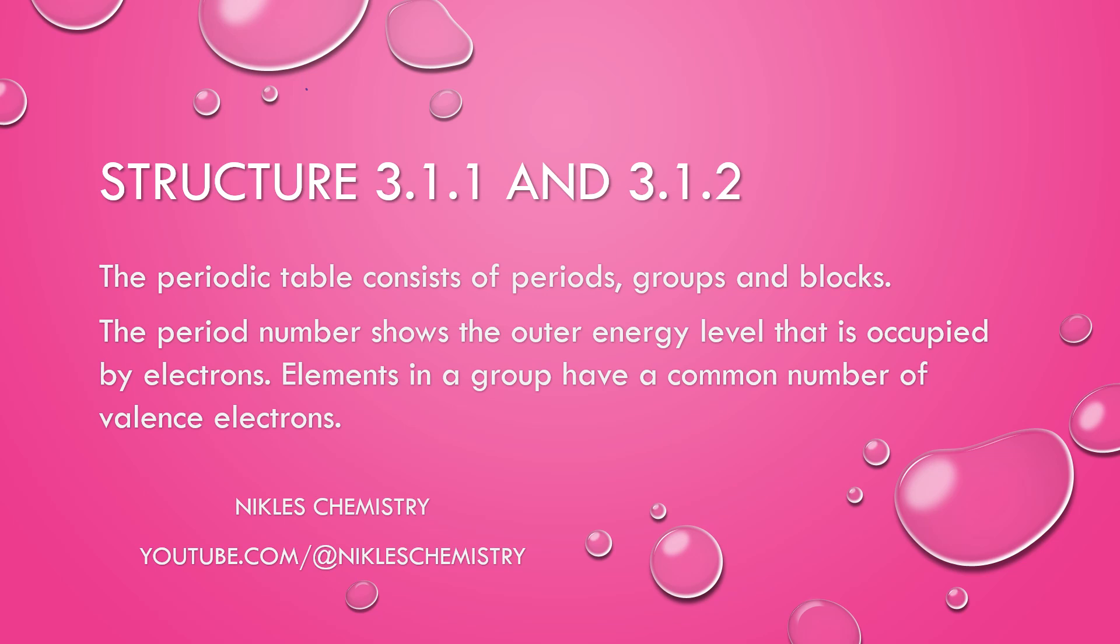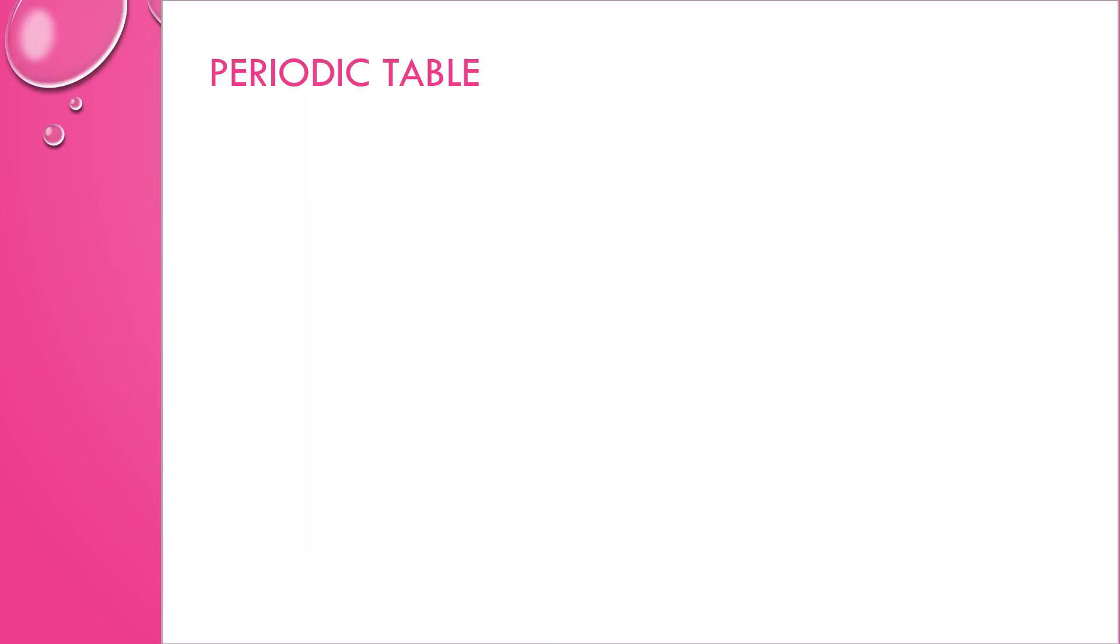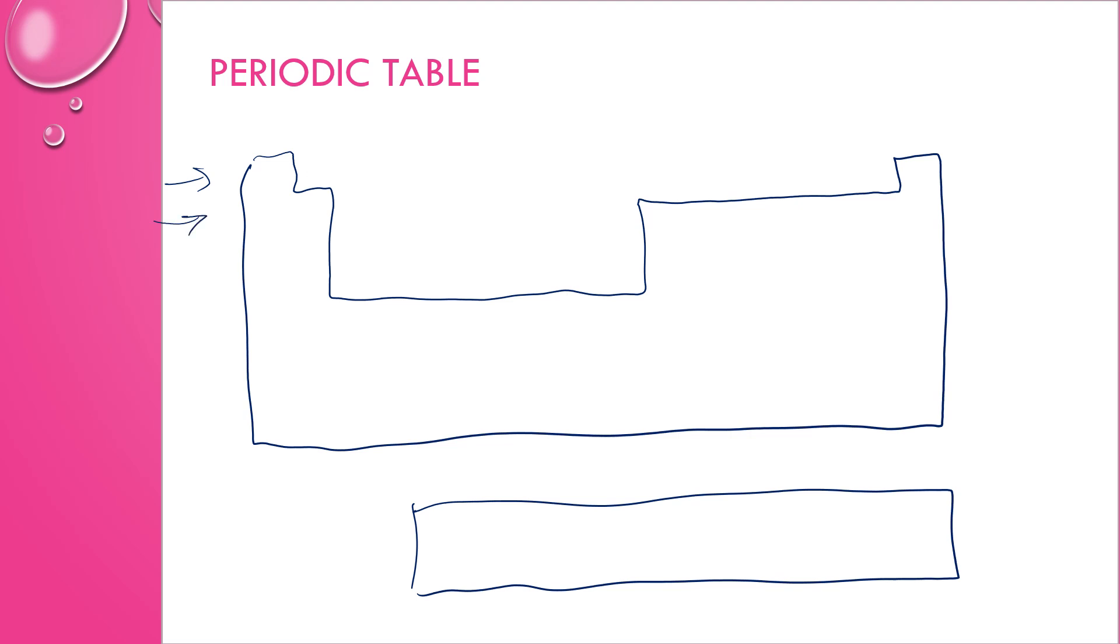We're looking at periods, groups, and blocks, and then the principal energy level and valence electrons. Let's see what kind of information we can get from the periodic table. Here's our generic periodic table structure. Rows are called periods, and the periods correspond to the outermost energy level for the atom.